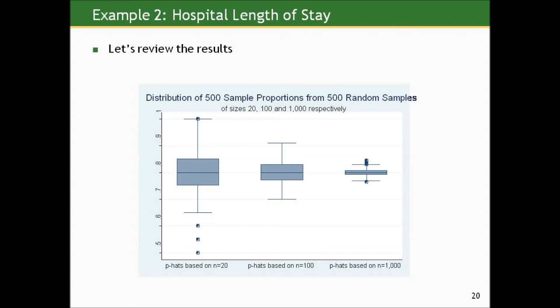In the next section, we'll show how to estimate characteristics of this sampling distribution from a single sample of binary outcomes — very much mirroring what we did with continuous outcomes and means.